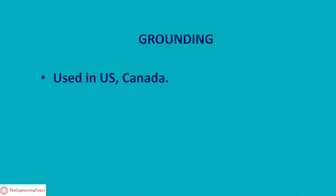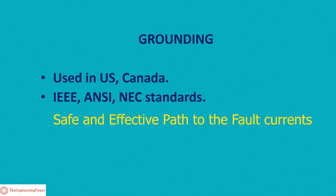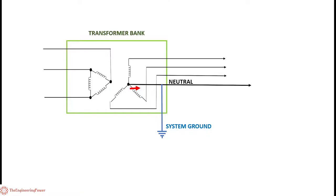The term grounding is used in US and Canada, which follows IEEE, ANSI, and NEC standards. Grounding is done to provide a safe and effective path to the fault currents in case of a serious fault in the system to protect the overall power system from damage.